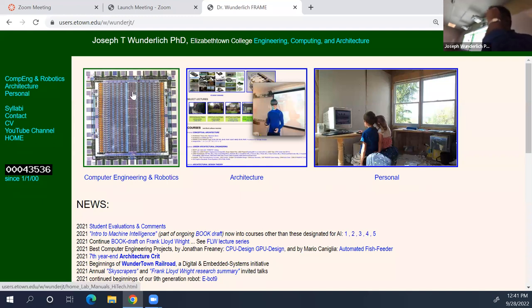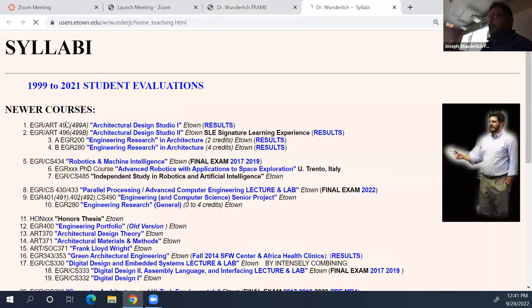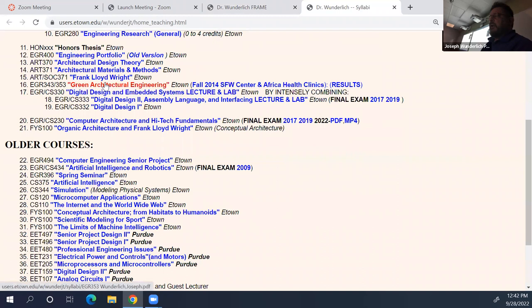This is my website, John Architecture and Computer Engineering and Robotics. I'm 61 years old. We're in the syllabi here, and we're in this course right here.